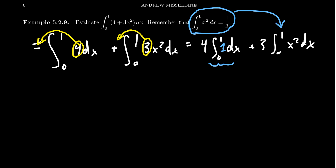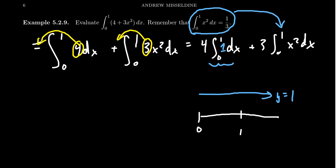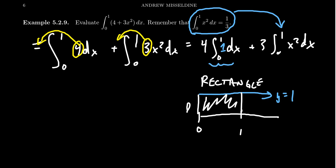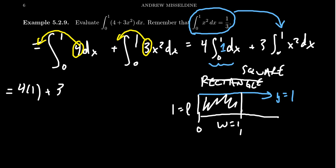For the integral from 0 to 1 of 1 dx: geometrically, we have the horizontal line y = 1, the x-axis below it, going from 0 to 1. That region is just a rectangle — actually a square — with length 1 and width 1, so its area is 1. Therefore, putting it all together: 4 times 1 plus 3 times one third equals 4 plus 1, which equals 5. The area under the curve is 5. We can use linearity to help compute definite integrals, much like we do with antiderivatives and derivatives.